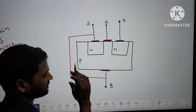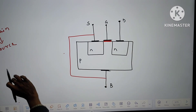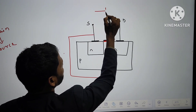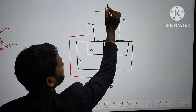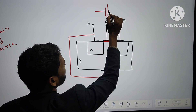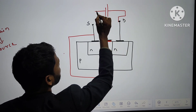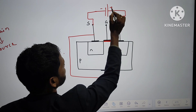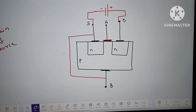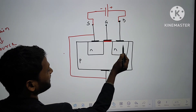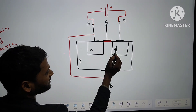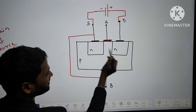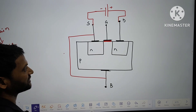We have multiple options; we will check one by one. We will provide a power supply through a battery connected to drain and source respectively — minus connected to source and plus connected to drain. Now, can current flow from drain to source? Drain is connected to N, and source is also connected to N. Can current flow through this terminal to this terminal?